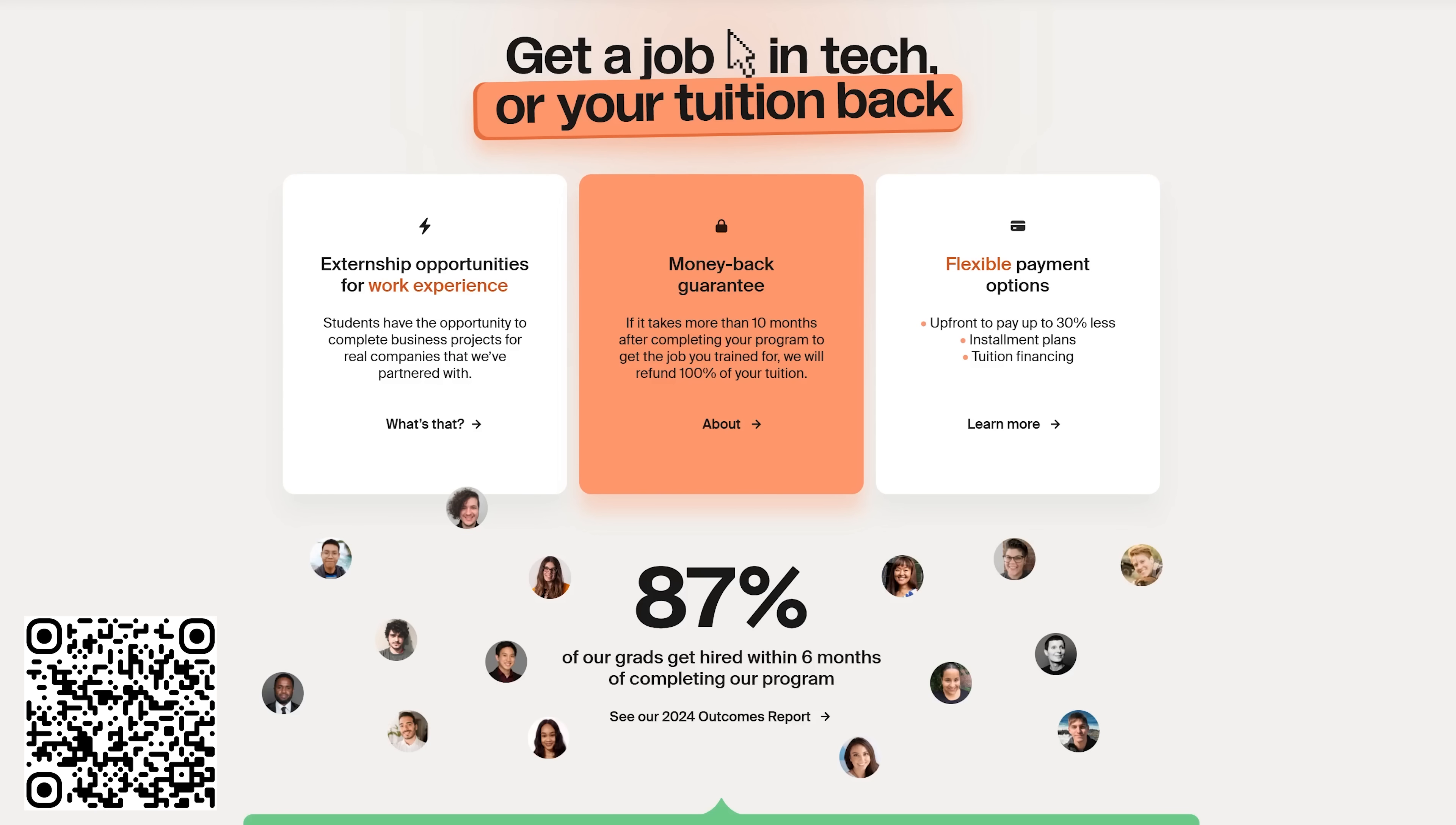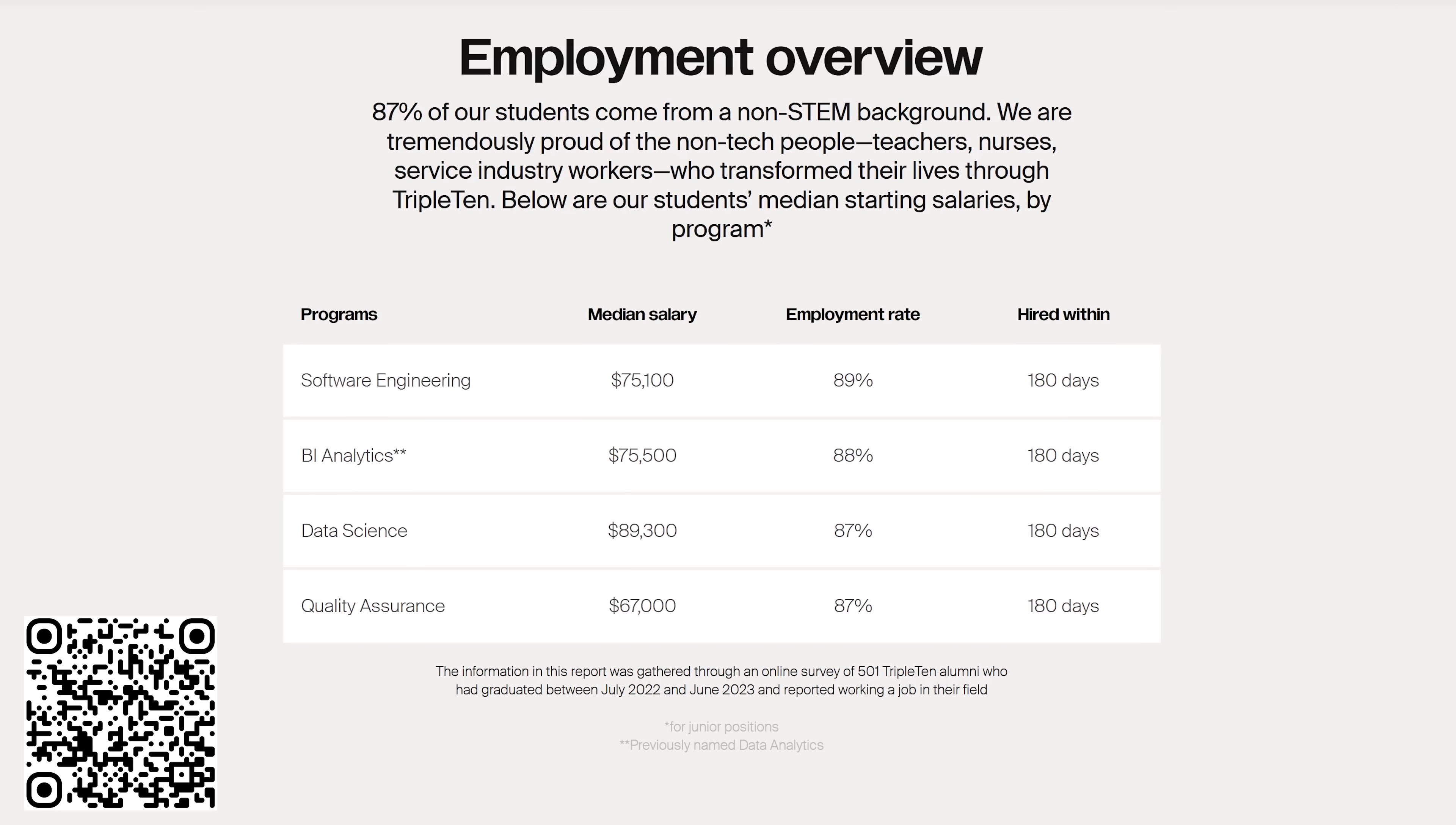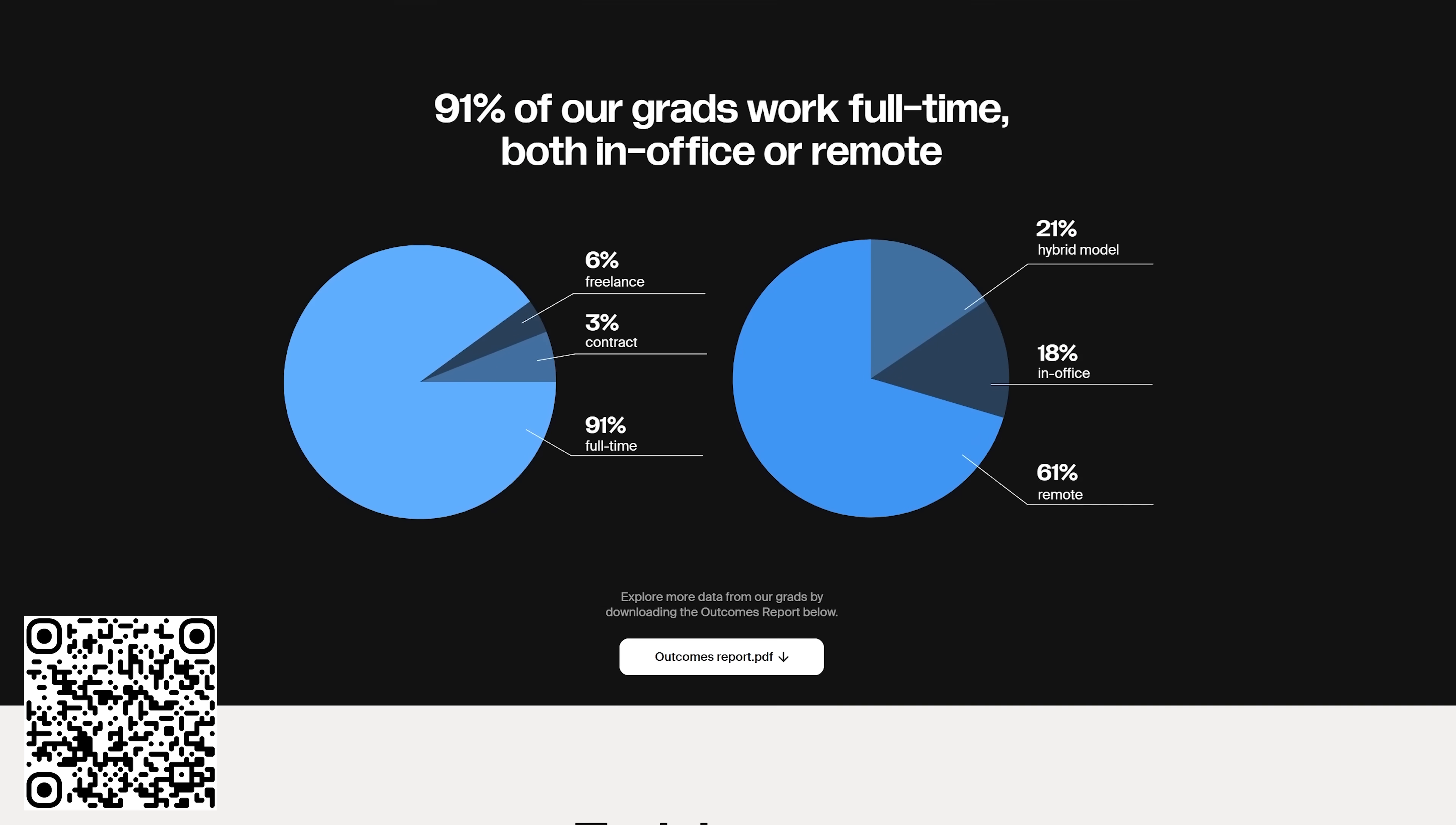Triple Ten is a flexible, beginner-friendly online bootcamp designed to help people switch to high-paying, in-demand tech careers. With one of the highest job placement rates in the industry, 87% of graduates land a job in tech within six months. The program provides real projects with real companies, giving students valuable experience that stands out to employers.